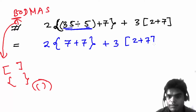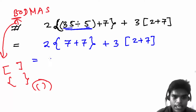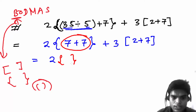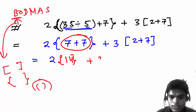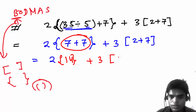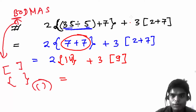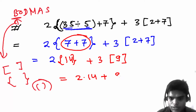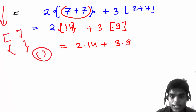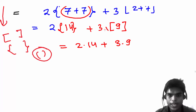First solve the small bracket: 35 divided by 5 is 7, plus 7 — the curly bracket now contains 7 plus 7 equals 14. Then copy the rest: plus 3, bracket open, 2 plus 7, bracket close. Now 2 plus 7 inside the small bracket is 9. So removing the brackets: two times 14, plus three times nine.